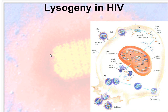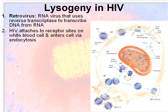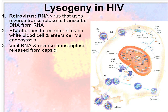Let's look at lysogeny in HIV. The retrovirus is basically how we would categorize HIV. A retrovirus is an RNA virus that uses reverse transcriptase to transcribe DNA from RNA — backwards from what we usually talk about. HIV attaches to the receptor sites on the white blood cell and enters the cell via endocytosis. The viral RNA and reverse transcriptase are then released from the capsid once the virus enters the cell.